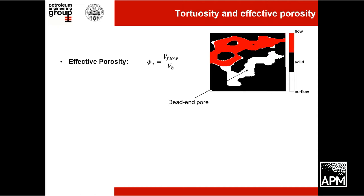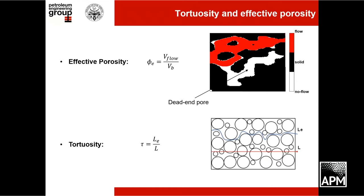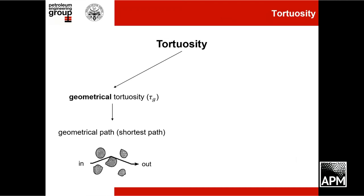Effective porosity differs from total porosity because it does not take into account the dead-end pores and the occluded pores. Tortuosity describes the sinuosity of the pore space and is generally defined as the ratio of the actual fluid path length LE to the length of the sample in the flow direction L. In porous media, two definitions of tortuosity are used: the first is geometrical tortuosity, which is the length of the shortest path between an inlet and an outlet divided by the length of the porous material.